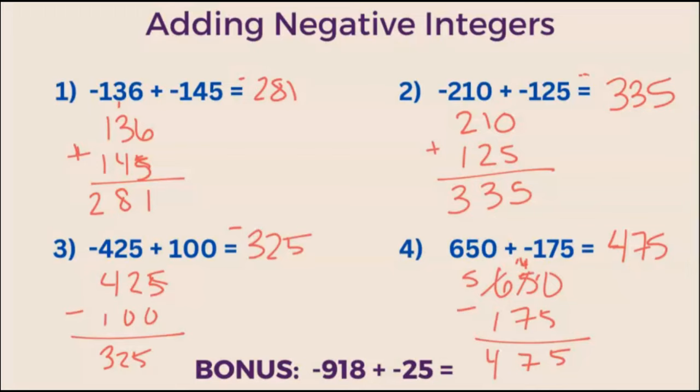The absolute value of positive 650 is just 650. And the absolute value of negative 175 is 175. 650 is greater. This one is positive. So your answer is going to be positive.